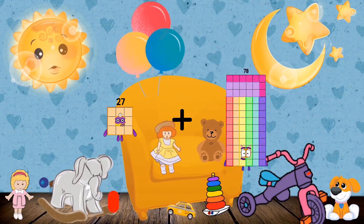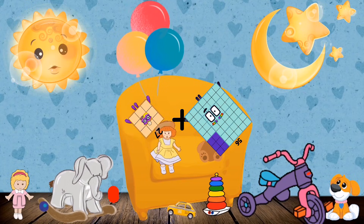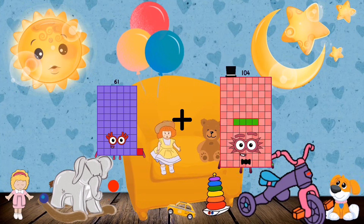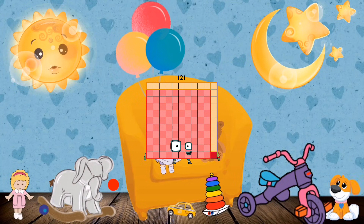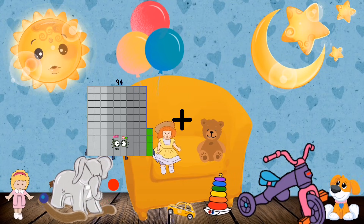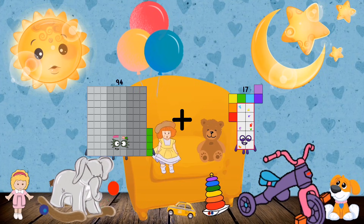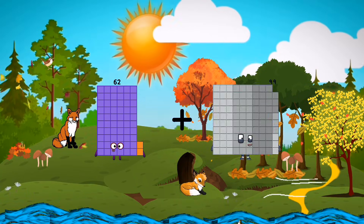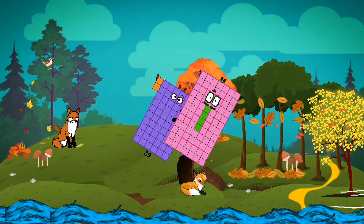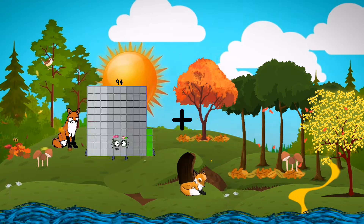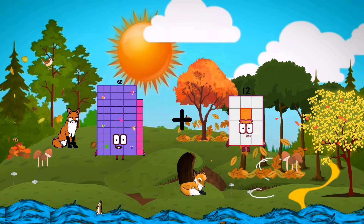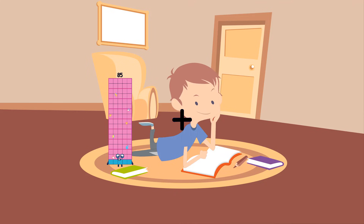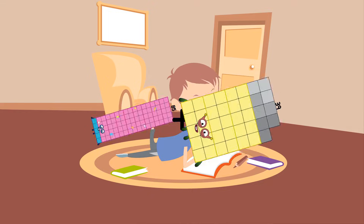27 plus 56 equals 83. 61 plus 60 equals 121. 94 plus 17 equals 111. 62 plus 84 equals 146. 68 plus 22 equals 90. 85 plus 69 equals 122.